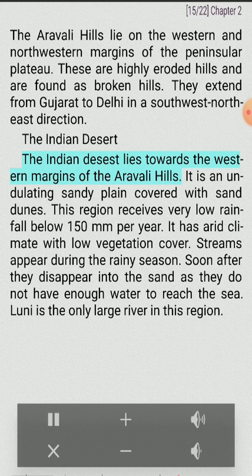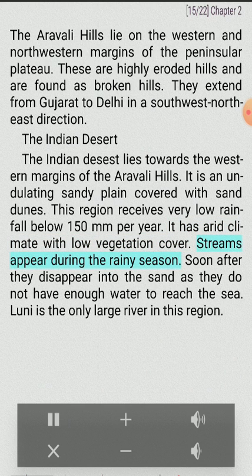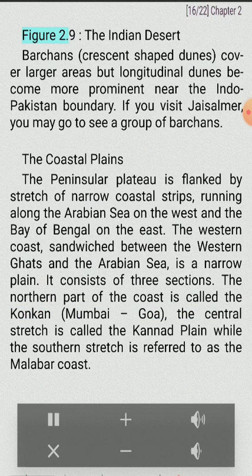The Indian Desert lies towards the western margins of the Aravali Hills. It is an undulating sandy plain covered with sand dunes. This region receives very low rainfall, below 150 millimeters per year. It has an arid climate with low vegetation cover. Streams appear during the rainy season but soon disappear into the sand as they do not have sufficient water. Luni is the only large river in this region. Barchans — crescent-shaped dunes — cover larger areas, but longitudinal dunes become more prominent near the Indo-Pakistan boundary.